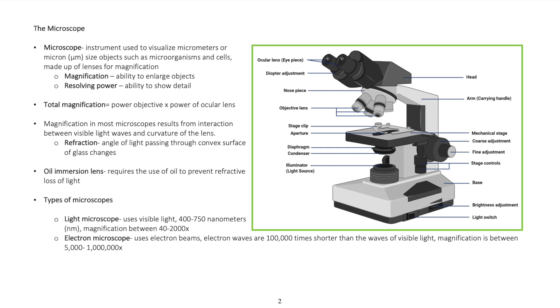Total magnification is the power of the objective times the power of the ocular lens. Magnification in most microscopes results from interaction between visible light waves and curvature of the lens through refraction, which is the angle of light passing through a convex surface of glass changing. Oil immersion lens requires the use of oil to prevent refractive loss of light.